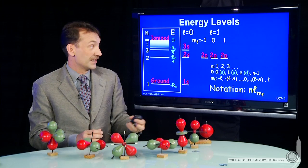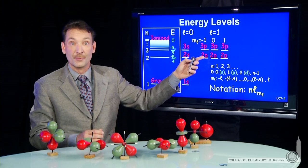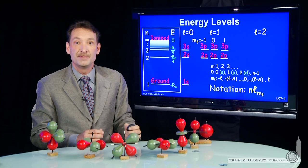And of course, when n equals 3, you can still have l equal 1. So you'll have a set of 3p orbitals: 3px, 3py, and 3pz.